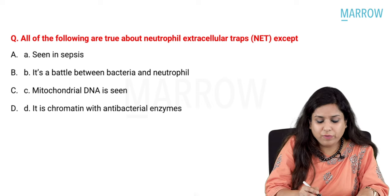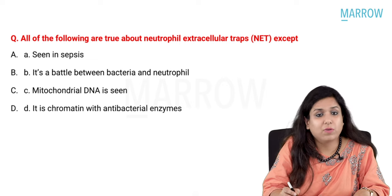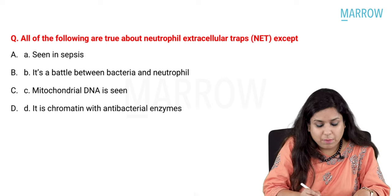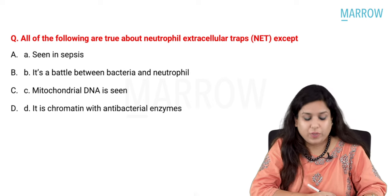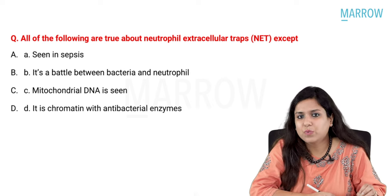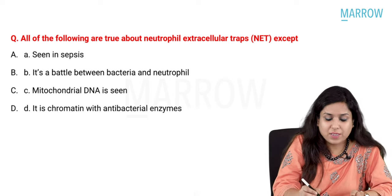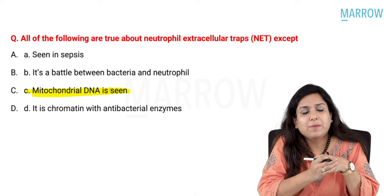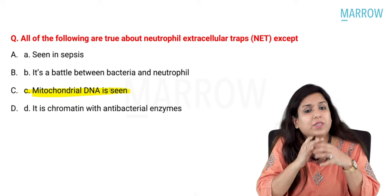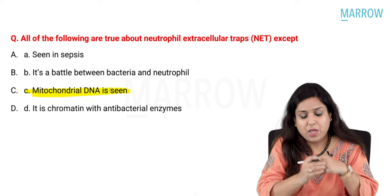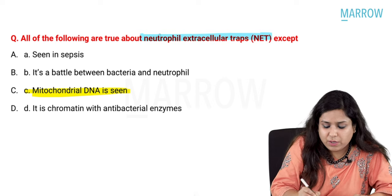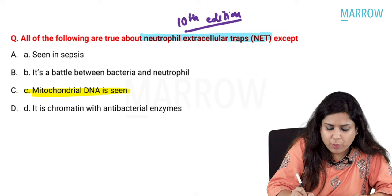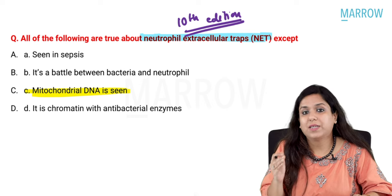The first question was: all of the following are true about neutrophil extracellular traps EXCEPT they are seen in sepsis; it is a battle between bacteria and neutrophils; mitochondrial DNA is seen; it is chromatin with antibacterial enzymes. The answer is mitochondrial DNA is seen. Neutrophil extracellular traps have no relation with mitochondrial DNA. This topic has been added in the 10th edition of Robbins, making it a very potential exam question.